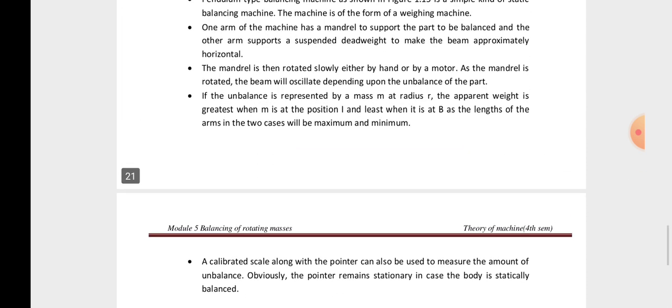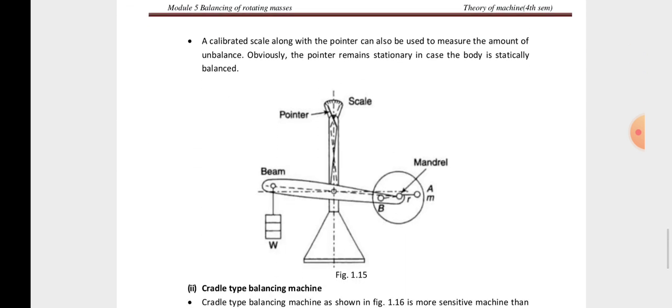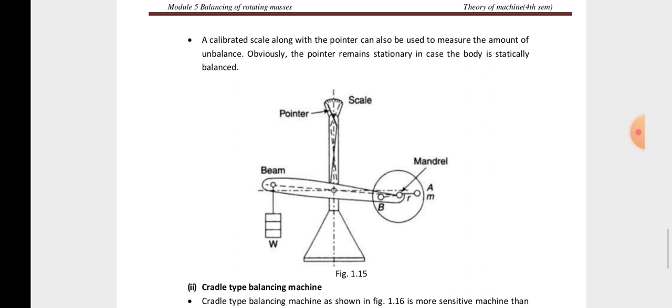If the balance is represented by mass M at radius R, the apparent weight is greatest when M is at position A and least when it is at position B, giving maximum or minimum arm lengths in the two cases. The vertical scale has a pointer, and one end of the horizontal beam has the mandrel where weight W is added. A calibrated scale along the pointer can also be used to measure the amount of unbalance, with the scale indicating the value of the unbalanced mass.